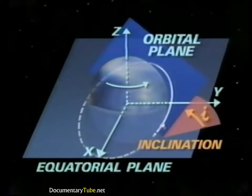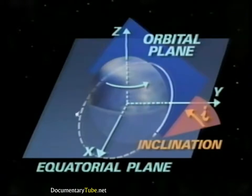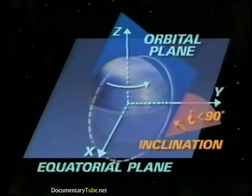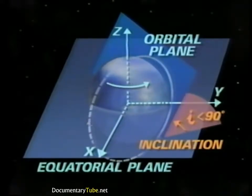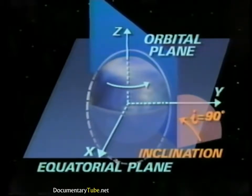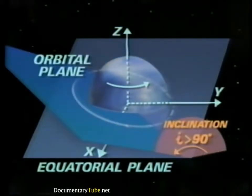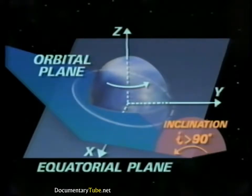Inclination is the angle between the equatorial plane and the orbital plane. A satellite which has an eastward velocity component at the ascending node has an orbital inclination lying between 0 and 90 degrees — such an orbit is called a prograde orbit. A satellite which moves due north at the ascending node is in a polar orbit, with an orbital inclination of exactly 90 degrees. A satellite with a westward velocity component at the ascending node is in a retrograde orbit, with an orbital inclination between 90 and 180 degrees.